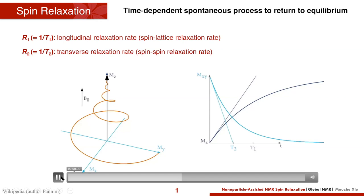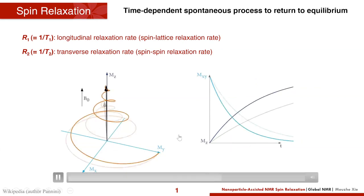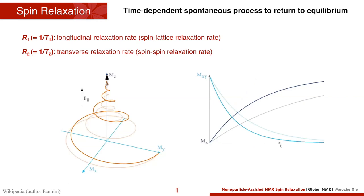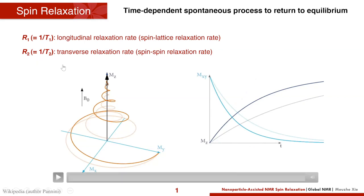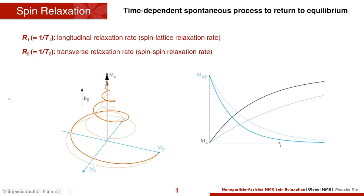If you have two spins, one recovers faster and the other returns to equilibrium state slower, you will see different relaxation behaviors. More often we use R1 and R2 to describe the relaxation rate, which are the inverse of T1 and T2.